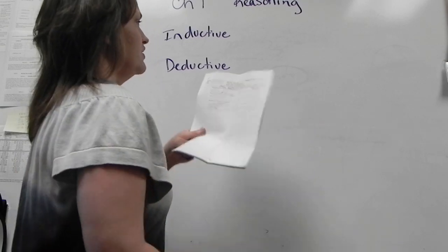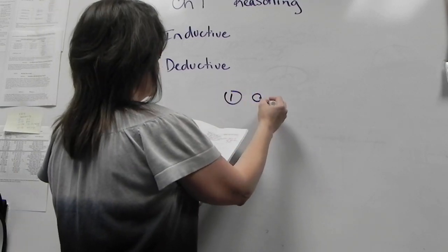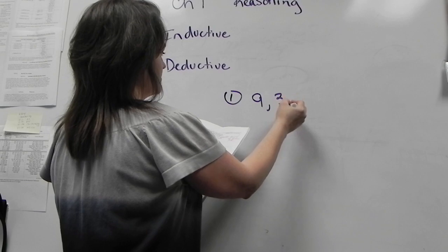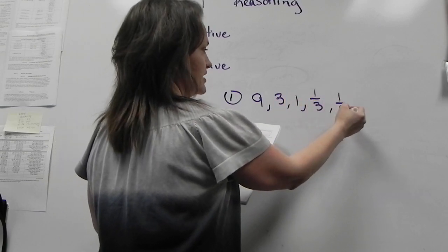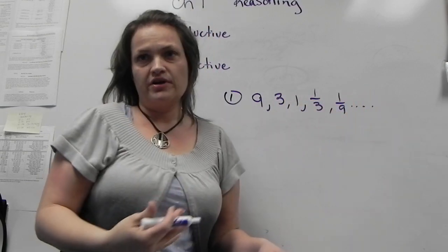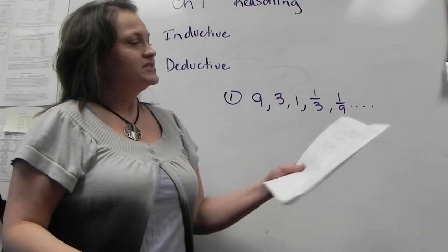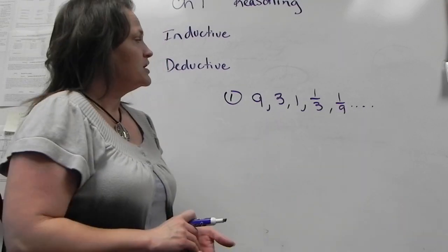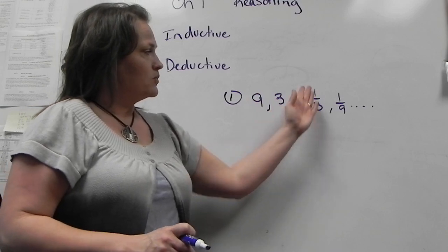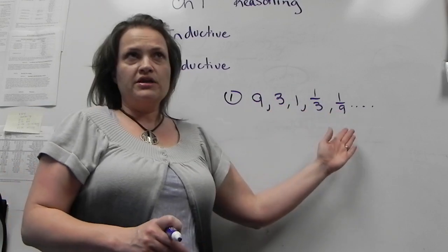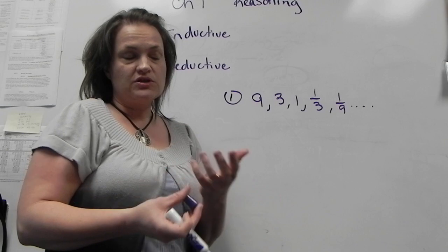On number 1 of your study guide — this is your midterm study guide — we see this pattern, or something like it, depending on how Math Excel has regenerated your problem. We're supposed to guess the next three numbers. So we've got 9, 3, 1, 1/3, 1/9. It looks like we're dividing by 3 each time.